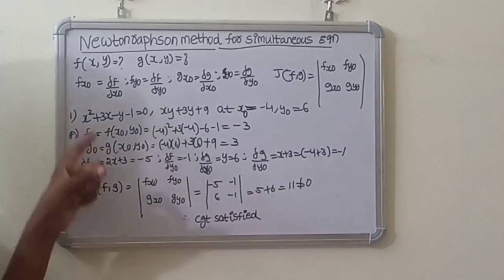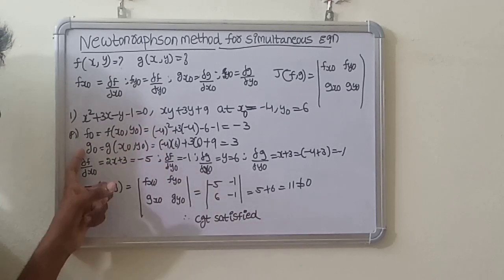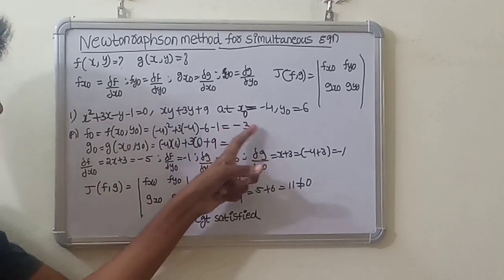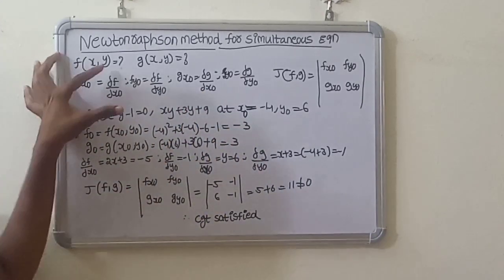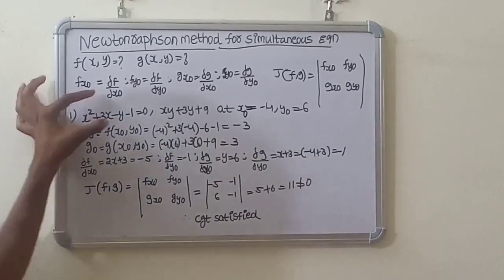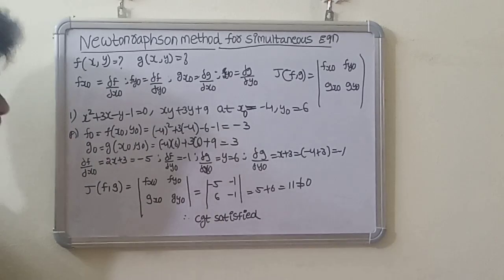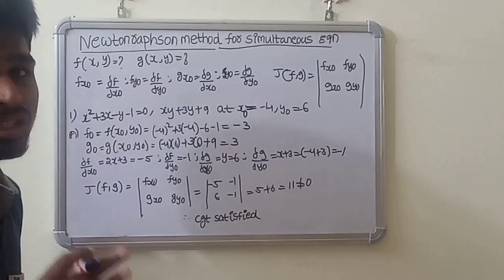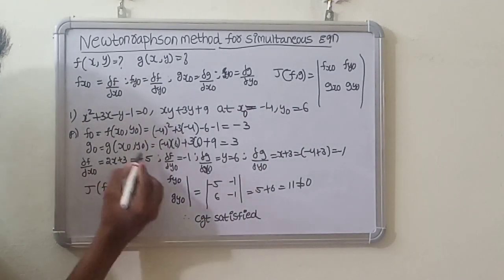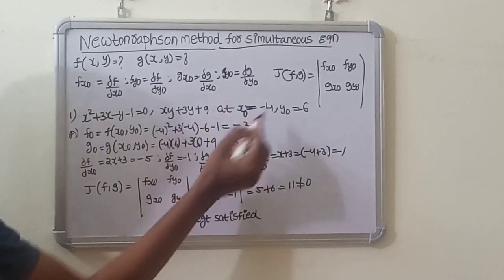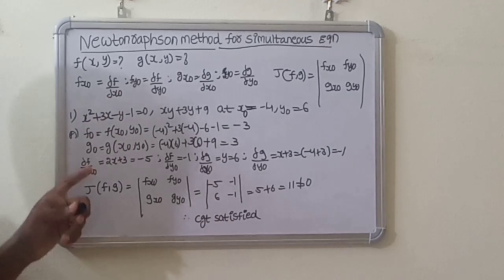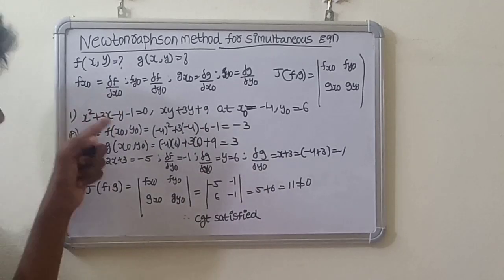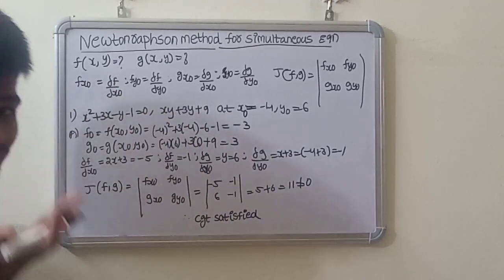At the initial point, the functions are f0 and g0 at x0, y0. Substituting x0 and y0 values into f, we compute the partial derivatives: rho f by rho x0, rho f by rho y0, rho g by rho x0. Similarly, partially differentiate f and g with respect to x and y at points x0, y0.